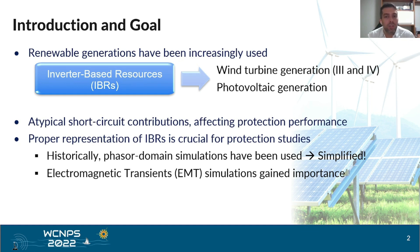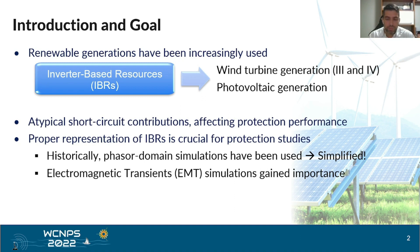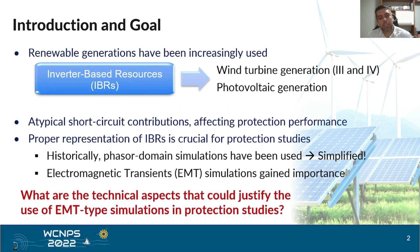Historically, phasor domain simulations have been used, but in these simulations simplified models are typically applied, and it has led electromagnetic transient simulations to gain importance because they are capable of representing any transient event, depending on the model used. So the question here is: what are the technical aspects that could justify the use of EMT-type simulation in protection studies? The goal of this paper is to answer this question, providing some evidences and cases that can justify the use of these detailed models available in electromagnetic transient simulations.